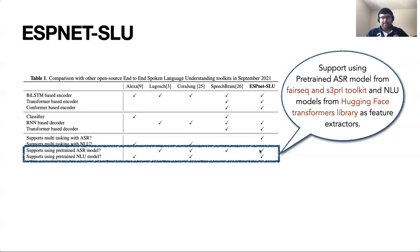Recent work has advanced the state-of-the-art SLU performance by building the architecture on self-supervised ASR and NLU models. Inspired by this work, we also support options to use pre-trained ASR and NLU models as feature extractors. We use the S3PRL and FairSeq toolkit to access a variety of self-supervised learning representations as speech processing front-ends in our SLU architecture. We further integrate the Hugging Face Transformers library, which allows usage of numerous generic and task-specific pre-trained NLU models.